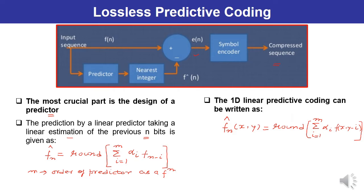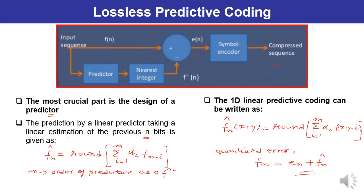The presence of a quantizer takes the prediction error into a limited range of output. When the prediction at the source and destination are equal, the reconstructed value can be written as: f(n) = e(n) + f̂(n), where e(n) is the quantized error.